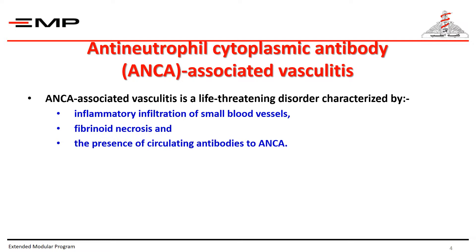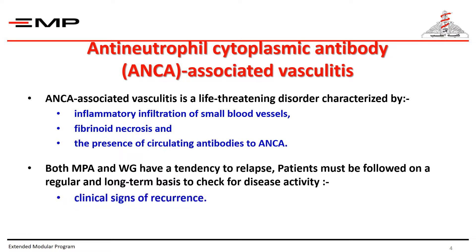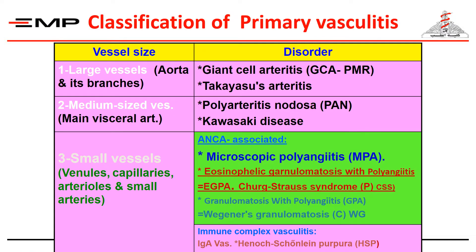There is fibrinoid necrosis and the presence of circulating antineutrophil cytoplasmic antibodies (ANCA). Both microscopic polyangiitis and granulomatosis with polyangiitis have a tendency to relapse. Patients must be followed on a regular and long-term basis to check disease activity — including clinical signs of recurrence, ESR, and C-reactive protein as acute phase reactants — and also the levels of ANCA antibodies, because they go hand in hand with disease activity.